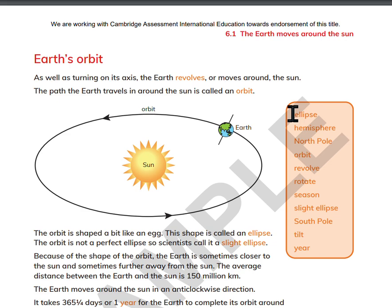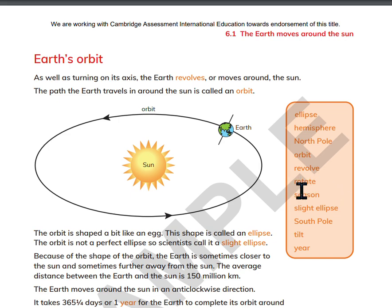The key words are: ellipse, hemisphere, north pole, orbit, revolve, rotate, season, slight ellipse, south pole, tilt, and year.